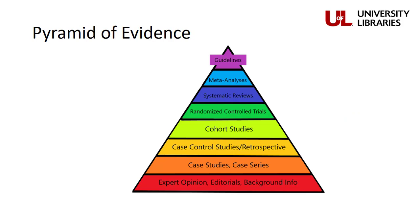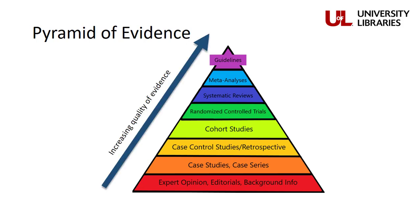The pyramid of evidence is used to rank different types of research literature based on their quality and reliability. As you move up the pyramid, the methodology used in each type of article increases, and so does the quality of evidence. So when looking for the best evidence, you want to find literature towards the top of the pyramid. However, it's important to note that the higher you go on the pyramid, the fewer articles there are.